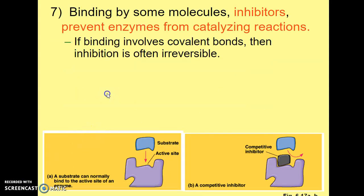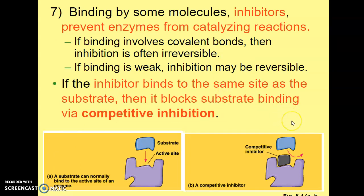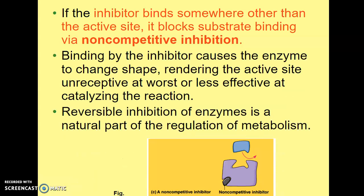Another factor is binding to inhibitors. If there are inhibitors present, that can influence the reaction rate because inhibitors are molecules that can actually prevent an enzyme from catalyzing reactions. If the inhibitor binds to the same site as the substrate, it will block the substrate from binding — we call that competitive inhibition. But if the inhibitor binds somewhere other than the active site on the enzyme, it will still block the substrate from binding but is not binding the exact active site — so we call that non-competitive inhibition.